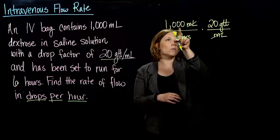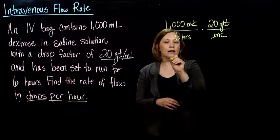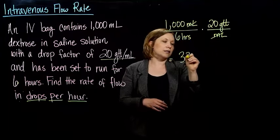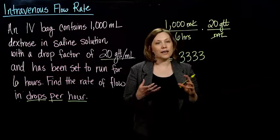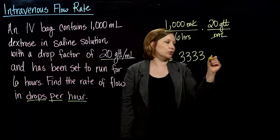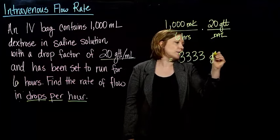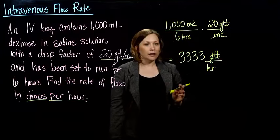and I've got 1,000 times 20, and then divide that by 6, and it'll give you 3,333.33333, but we can't have part of a drop, so we just round to the nearest whole drops. So that would be drops per hour. So there we have it.